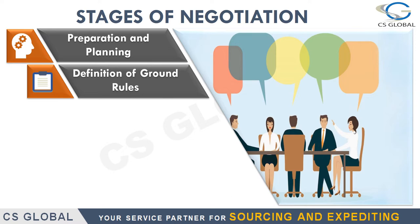The second stage is the definition of ground rules. In this step, rules and procedures will be established for the planned negotiation. Consideration will be given to questions such as: who will do the negotiation — will we do it personally or invite a third party? Where will the negotiation take place?